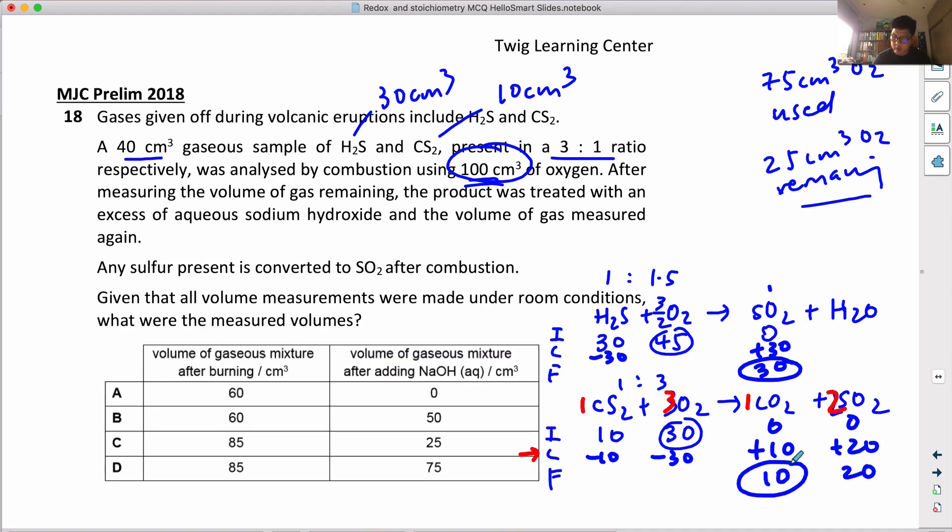I'm going to circle all the acidic gases. The volume of gas remaining was treated with excess sodium hydroxide and the volume measured again. After burning there'll be 25 cm³ of oxygen remaining, plus 60 cm³ of CO2 and SO2 together, so the volume of gas after burning should be 85. Sodium hydroxide is a base - it will absorb all the acid gases, leaving only oxygen behind. So the volume after adding sodium hydroxide has to be 25. The answer is C.